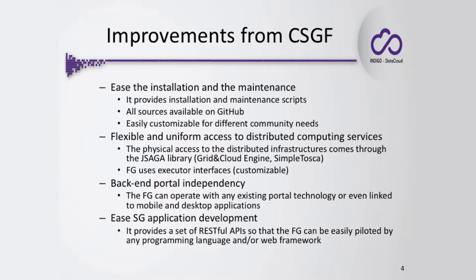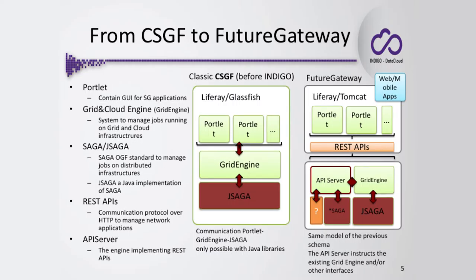Another key point is that we are providing a solution that is totally portal-independent. In the Catania Science Gateway Framework we were proposing a specific portal technology, but communities may already have a portal serving their science. With the Future Gateway, you no longer need to use our suggested portal solution. We also focused on making application development as easy as possible, accomplished by adopting the RESTful API solution, and REST APIs are well known to be very important for developing any kind of network application easily.